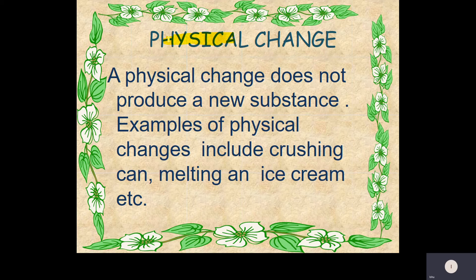A physical change does not produce a new substance. That means in this kind of change, there is only a change in the physical property of the substances. There will be no formation of new substances. Now we will understand this type of change with the help of examples.